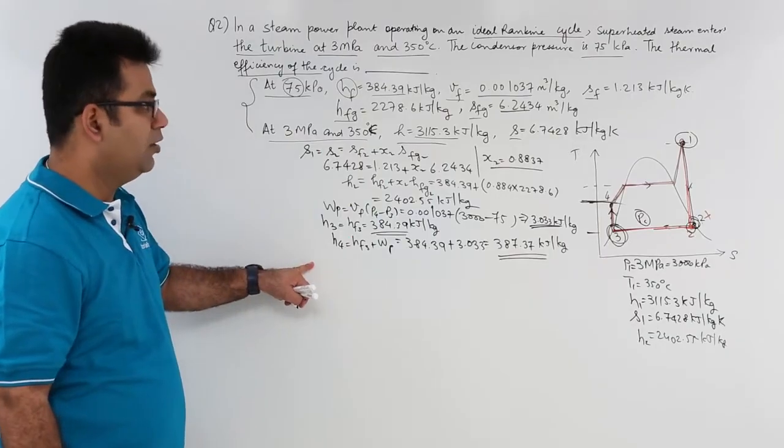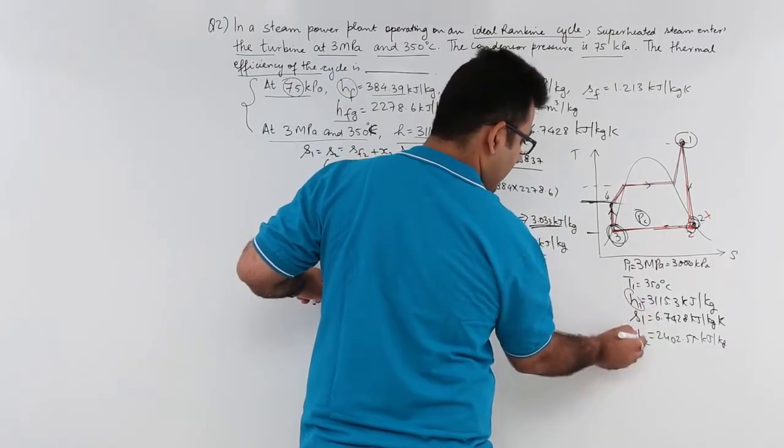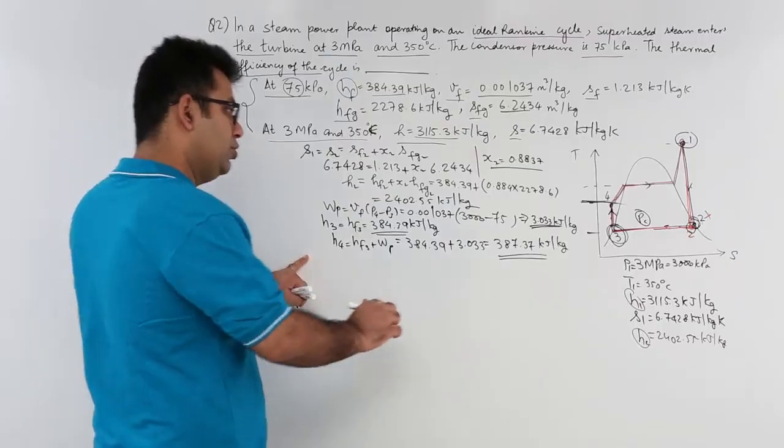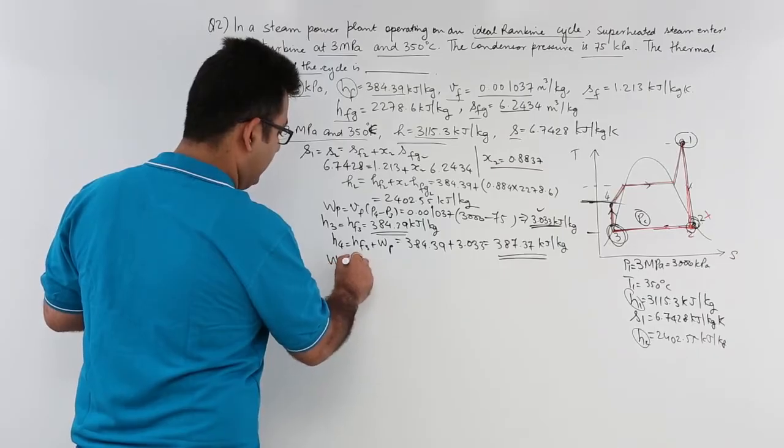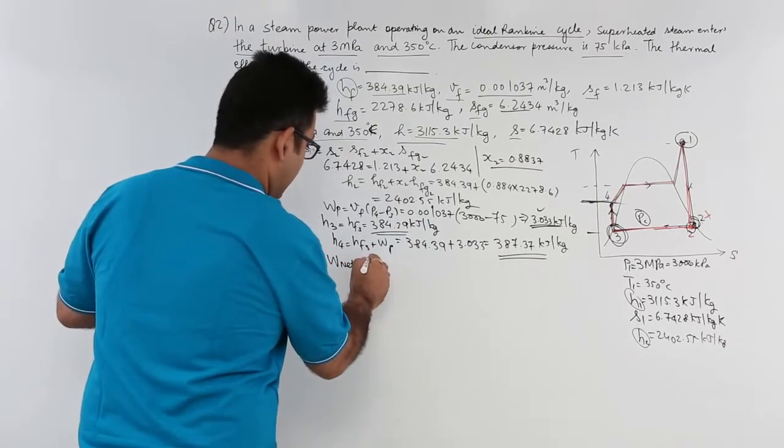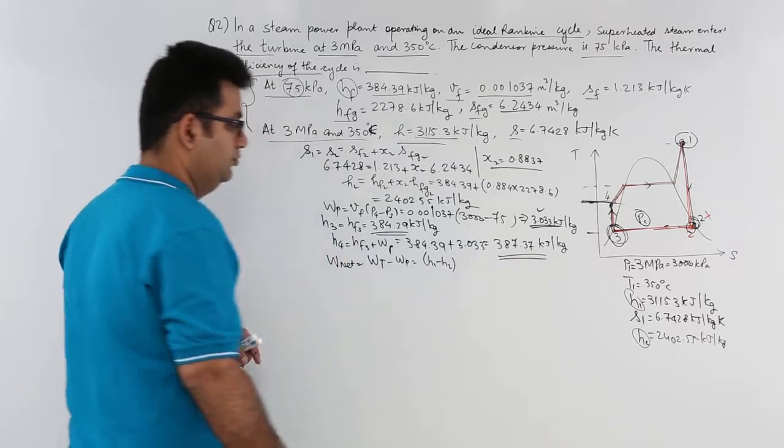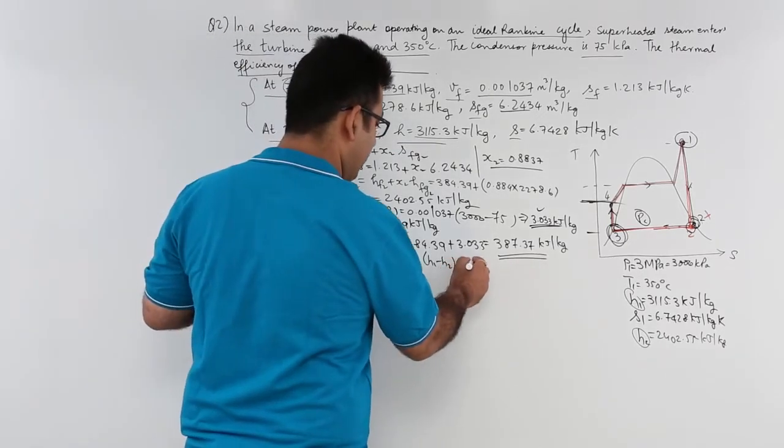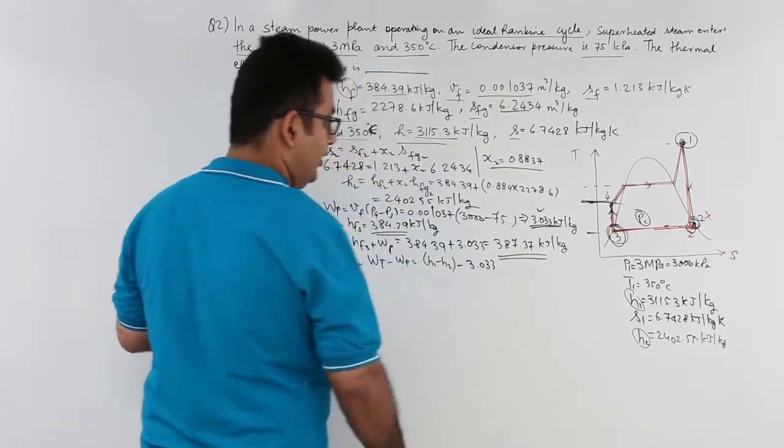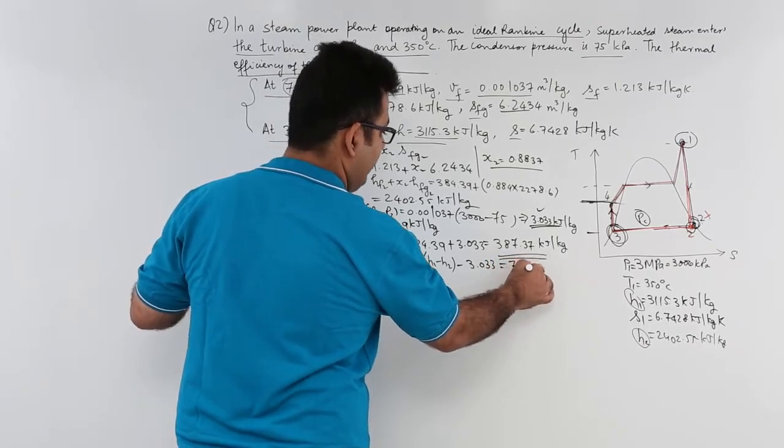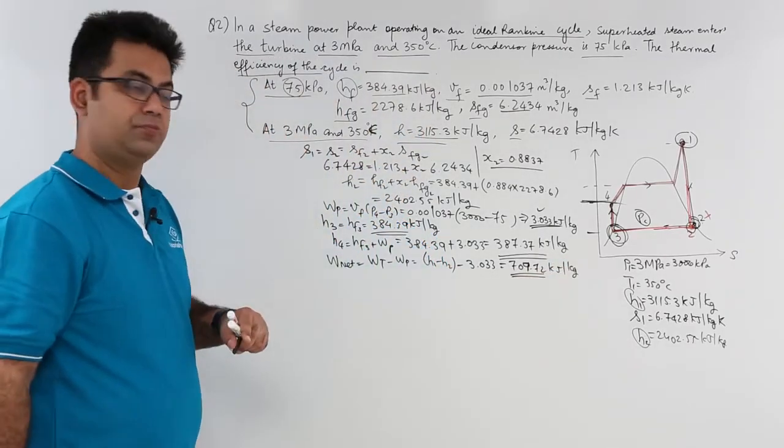Now, we have H4. Let us find out the turbine work. Because we have H1 and we have H2, I can easily find out turbine work and I also have the pump work. So, the net work can now be found out. Net work is equal to turbine work minus pump work. So, you have H1 minus H2, that is the turbine work minus the pump work. Do the simple calculations and the net work would be approximately 709.72. So, this is the net work output.